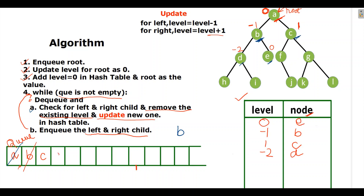The same nodes will be pushed into the queue as well. The while loop runs again — queue is not empty, with three nodes. Pop C and check its children. F is the left child and G is the right child. Left child: one minus one equals zero. Right child: one plus one equals two. Update the hash table: for zero, remove the existing entry and update with F; for two, add G. Push F and G into the queue.